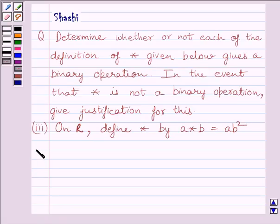Let us now start the solution. We have given A star B is equal to AB square.